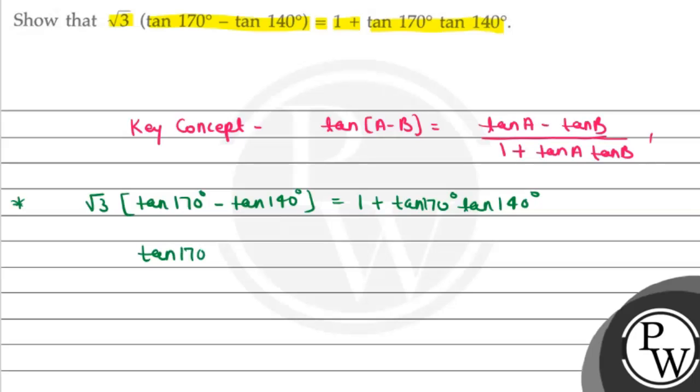tan 170° minus tan 140° whole upon 1 plus tan 170° tan 140° is equal to—we have to prove this will be 1 upon √3.